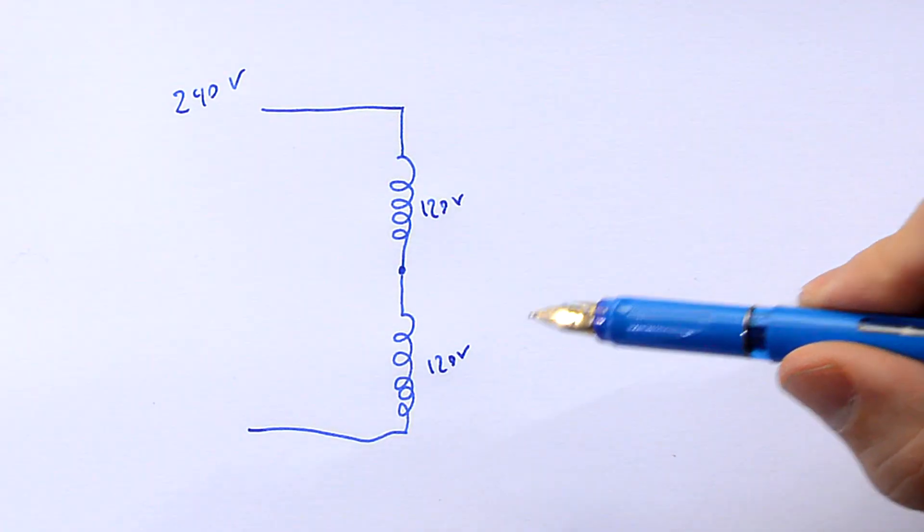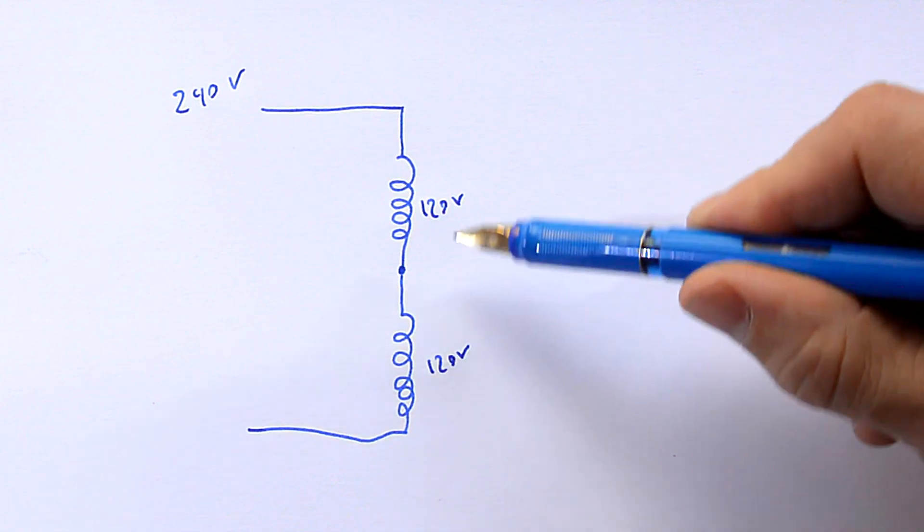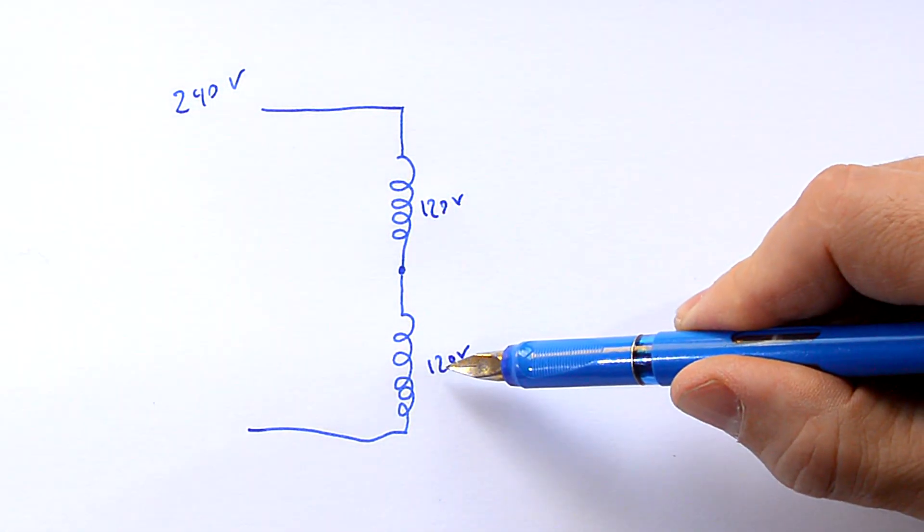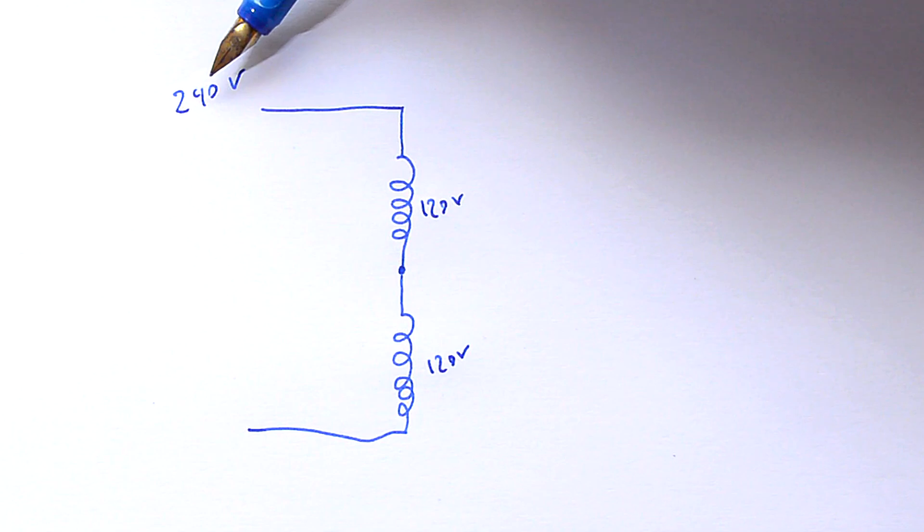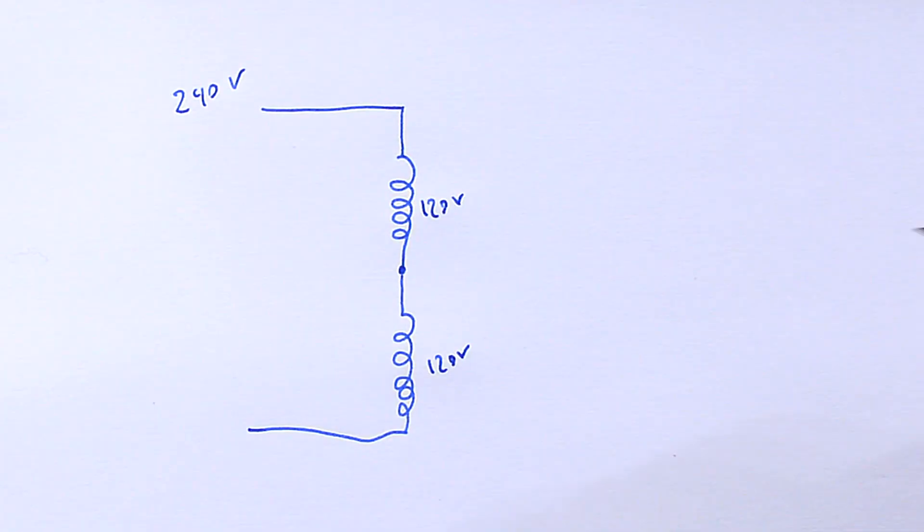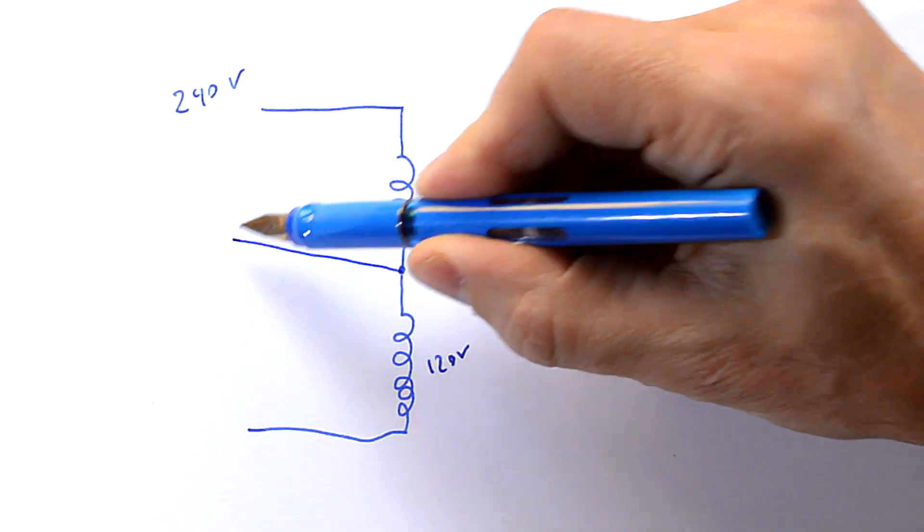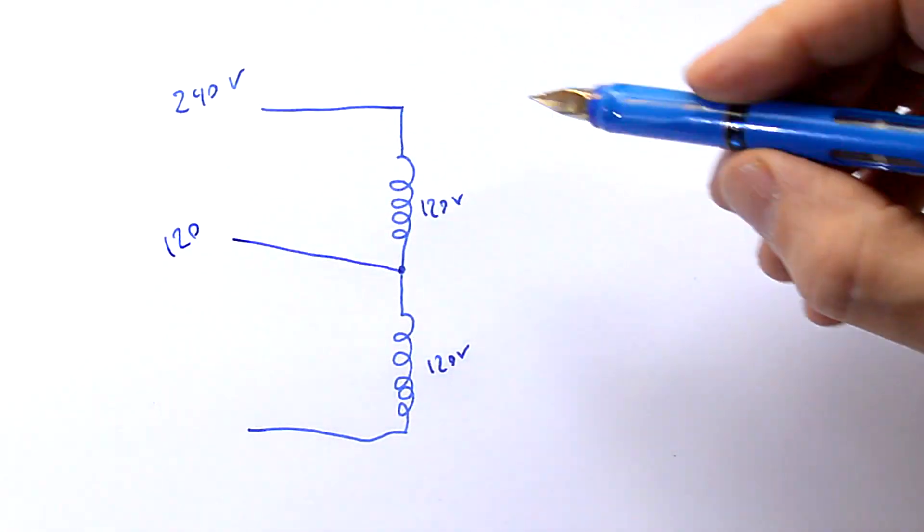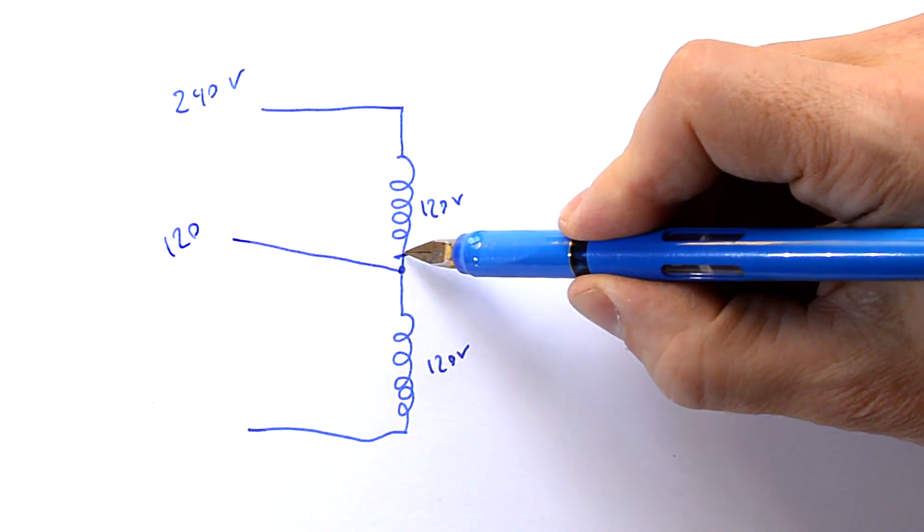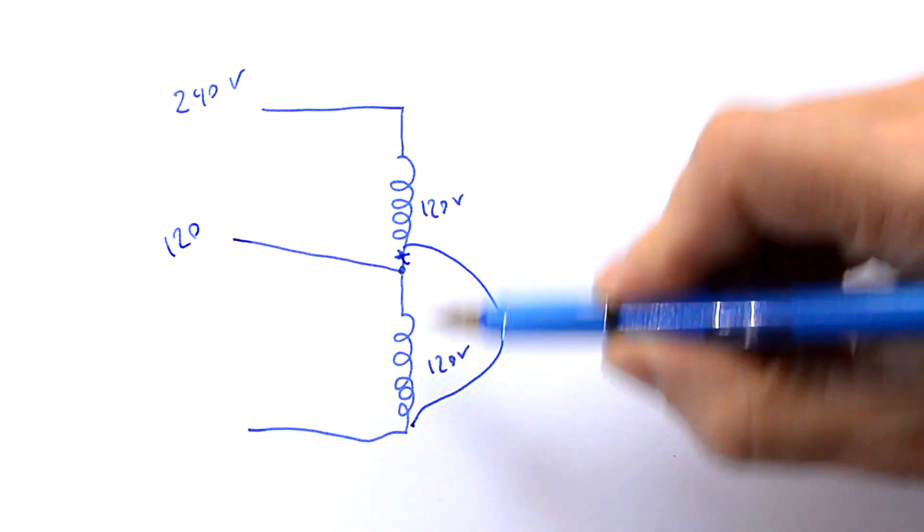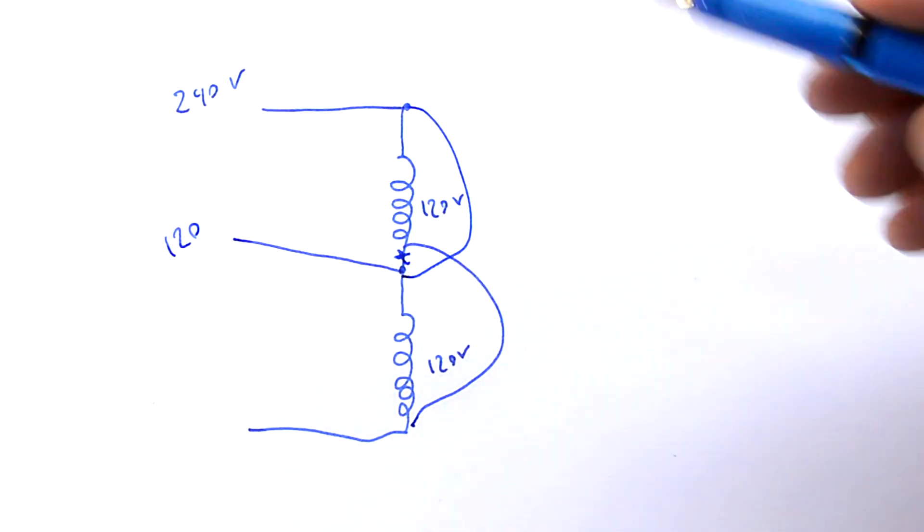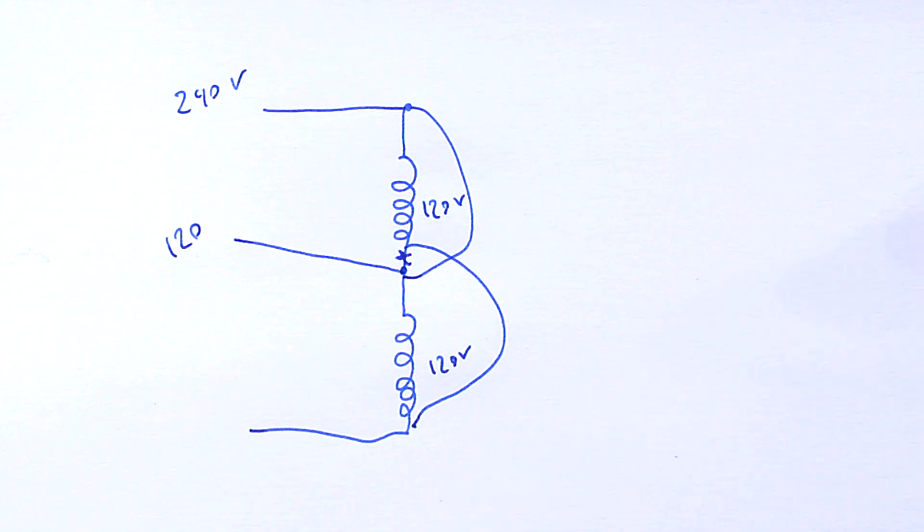The way these dual voltage motors work is you have two 120 volt coils in series and together those get up to 240 volts. Now if you want to run the motor at 120 volts you basically have 120 volts coming in here and you take this coil and rather than having it go here that goes here and that connects here. So effectively you have the 220 volt coils in parallel.